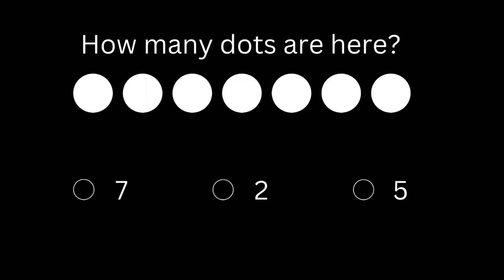How many dots are here? One, two, three, four, five, six, seven. Here are seven dots.